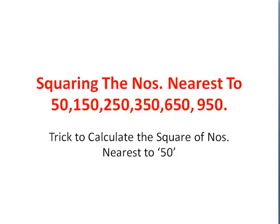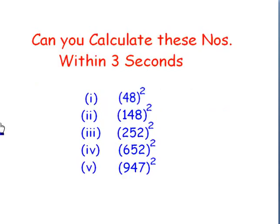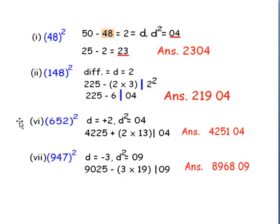Friends, can you calculate the square of these numbers within 3 seconds — like 48 square, 148 square, 250 square, 652 square and so on? Obviously, I think the answer is no. So let us know how to find the square of these numbers one by one. First, let us get the answer directly by using some tricks.